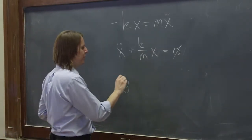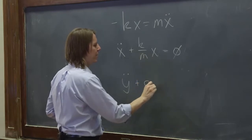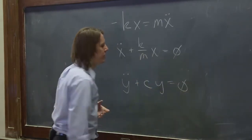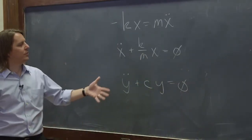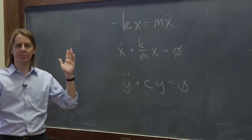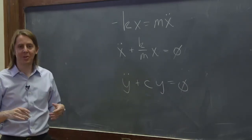In fact, it might be written in a completely different form. It might be y double dot plus a constant times y equals zero. So you might see in an advanced physics book they show that, and they say, oh, it's an oscillator. They don't bother to solve it every time.